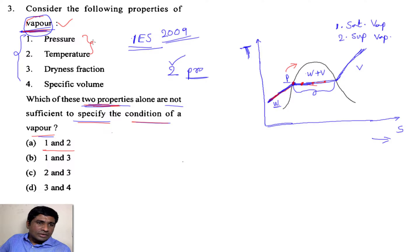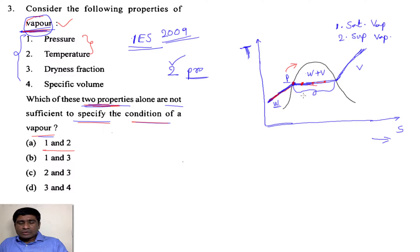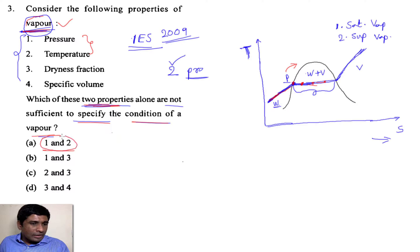Why? Because these are no longer independent — they are dependent on each other. So we need one more parameter to identify the state, because we need a minimum of two independent variables or parameters to identify the state. So from properties 1 and 2 alone, we cannot determine the state.